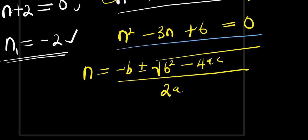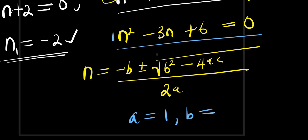From this, our a is 1, which is the coefficient of n²; b is -3, which is the coefficient of n; and c is 6, which is the constant.